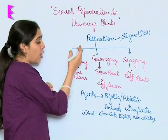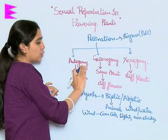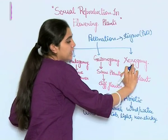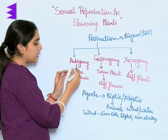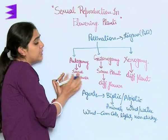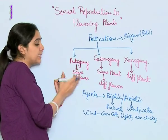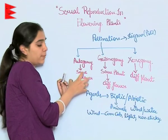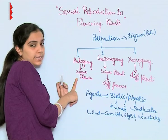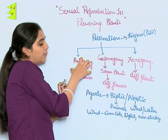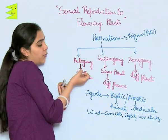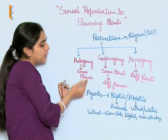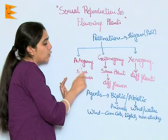Pollination is of three types: Autogamy, Geitonogamy, and Xenogamy. Autogamy is when the pollen grains are transferred onto the same flower — that is, male and female gametophytes are both present on the same flower, and pollens from the anther of the same flower reach the pistil of the same flower. This is Autogamy.